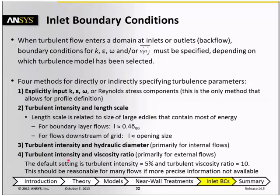In other cases, you can specify the turbulent intensity and the turbulent viscosity ratio. This is mainly used in external flows, but also in some cases where you're not really sure. The default setting is a turbulent intensity of 5% and a turbulent viscosity ratio of 10, and these are reasonable values for many flows in case you don't have more precise information available.